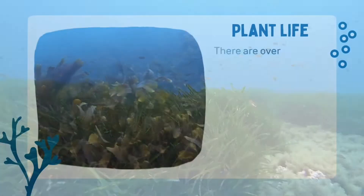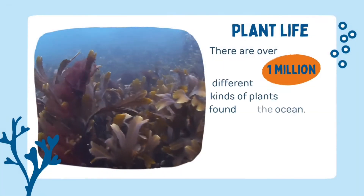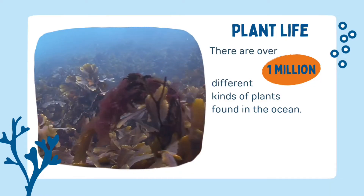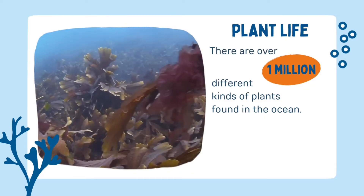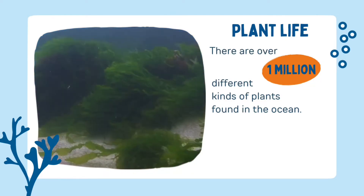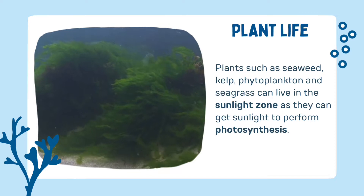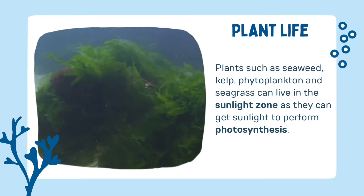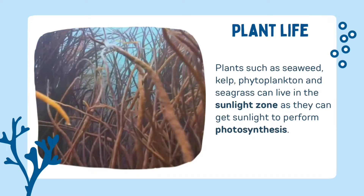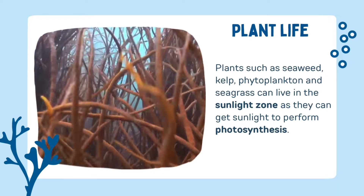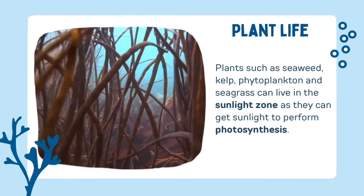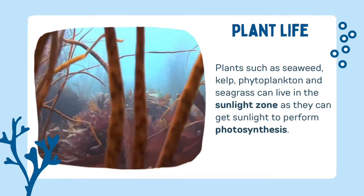Plenty of light means plenty of plants. There are over 1 million different kinds of plants found in the ocean. Plants such as seaweed, kelp, phytoplankton and seagrass can all live in the sunlight zone as they can get sunlight to perform photosynthesis.